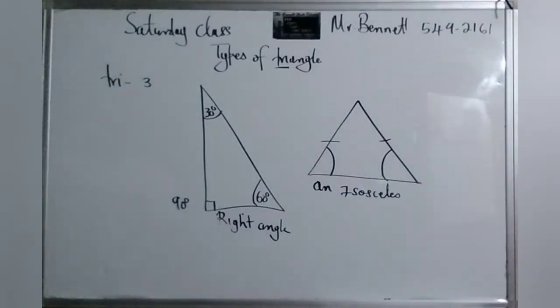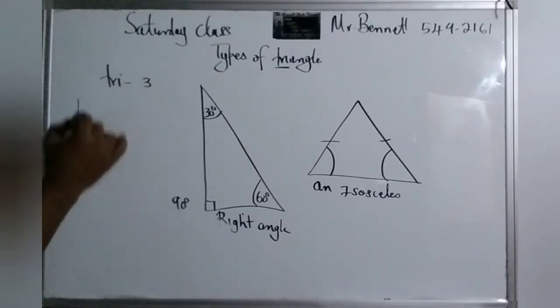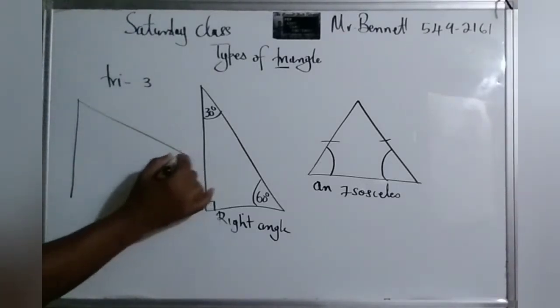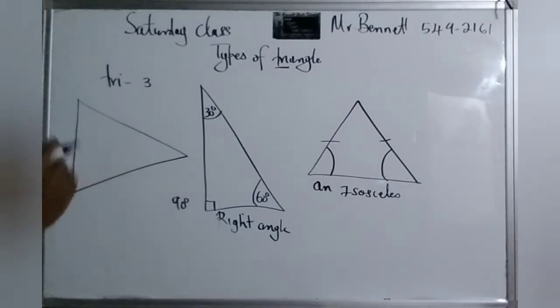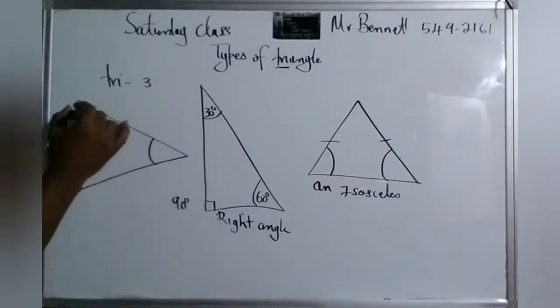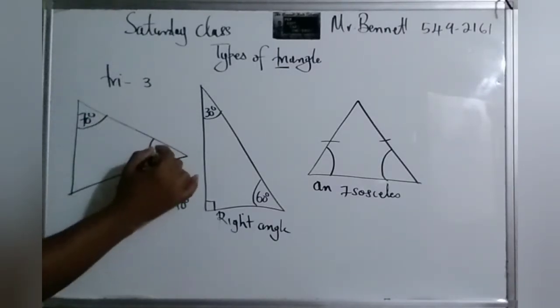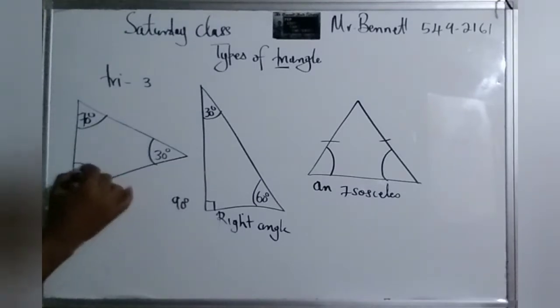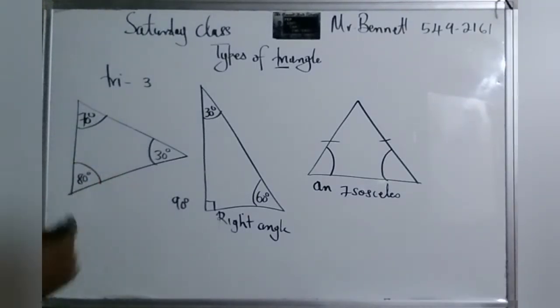So this is called an isosceles. All right, which other triangles are? Scalene. Scalene, very good. So the scalene, it's kind of weird because no side is equal, no angle is equal. So for example, this was 70, this was 30, and this was 80.